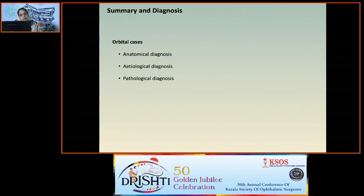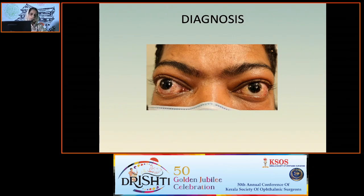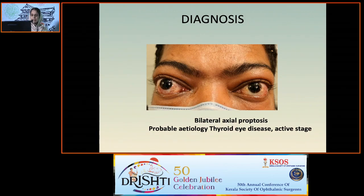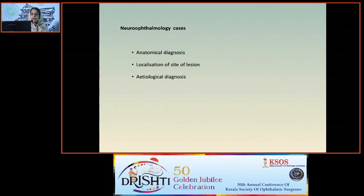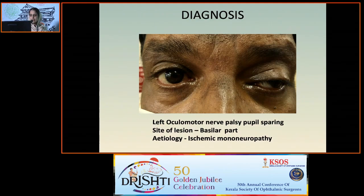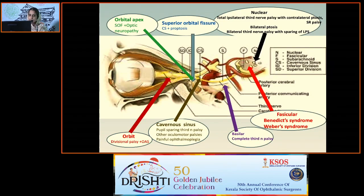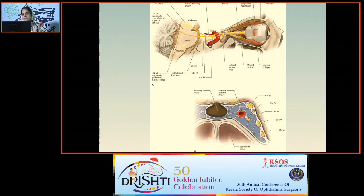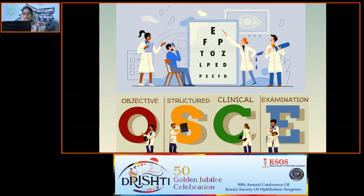For summary and diagnosis: give a thorough summary including relevant negative history. In orbital cases, provide anatomical, etiological, and pathological diagnoses. For example — bilateral axial proptosis with probable etiology of thyroid ophthalmopathy in active stage. For neuro-ophthalmological cases, provide anatomical diagnosis and lesion localization, then etiological diagnosis. For example — left ocular motor neuropalsy, pupil-sparing, site of lesion is basal part, etiology is ischemic mononeuropathy. Do an objective and structured clinical examination to get a good diagnosis in all orbital and neuro-ophthalmological cases.